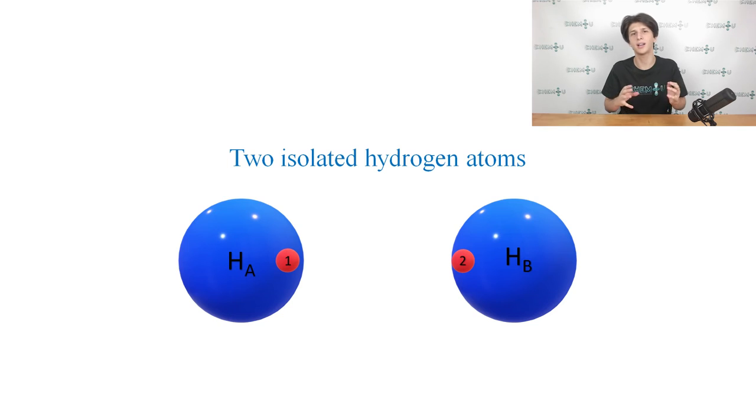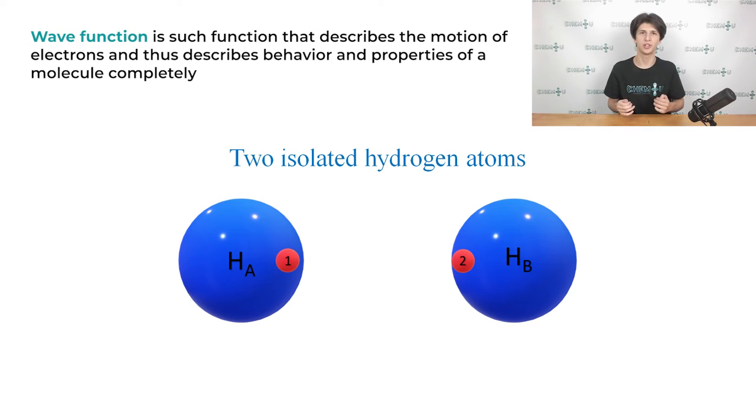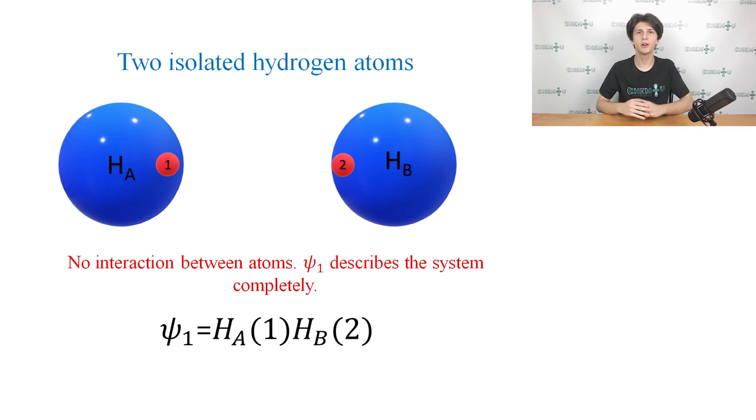Suppose we have two isolated hydrogen atoms. When the atoms are so far apart, there is no interaction between them. Electron 1 is exclusively associated with the hydrogen atom HA, while electron 2 resides with the nucleus of the hydrogen atom HB. As we have discussed, the wave function is such a function that describes the motion of electrons, and thus describes the behavior and properties of a molecule completely. That's why any possible state, in which one or more atoms exist, can be described by its wave function.